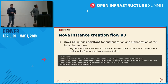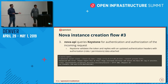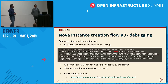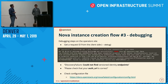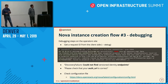The next step on the flow chart is: Nova API queries Keystone for authentication and authorization of the incoming request. What happens if it can't? We get an 'unexpected API error.' Go to the operator side, get the request ID from the client side, grep for that request in the logs, and we can see a discovery failure saying it could not find the identity endpoint — the OS_AUTH_URL might not be correct. Check the Nova configuration file for how Nova communicates to Keystone.